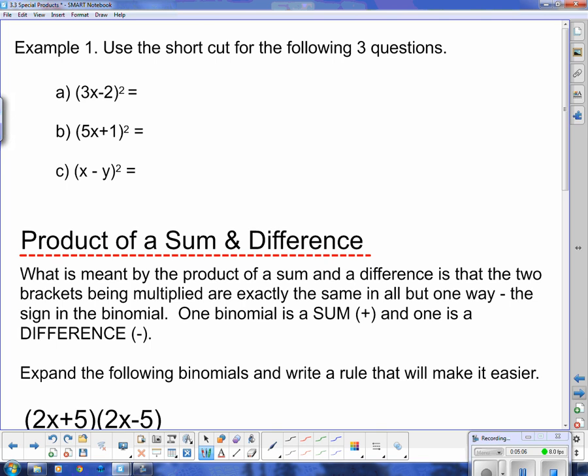So up here we have (3x-2) squared. So the shortcut was square the first term and I get 9x squared. Multiply those two together, which gives me negative 6x. And I know the two outside and inside terms are going to be the same. So I have two of those, which gives me negative 12x. And then square the last term will be positive 4.